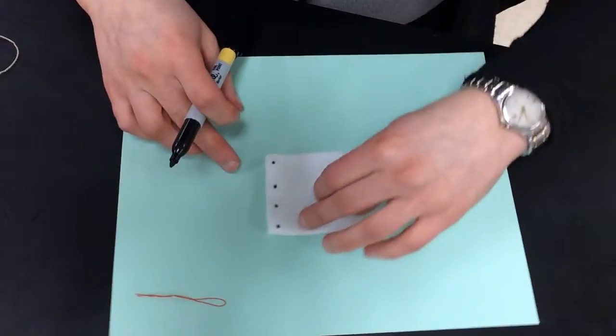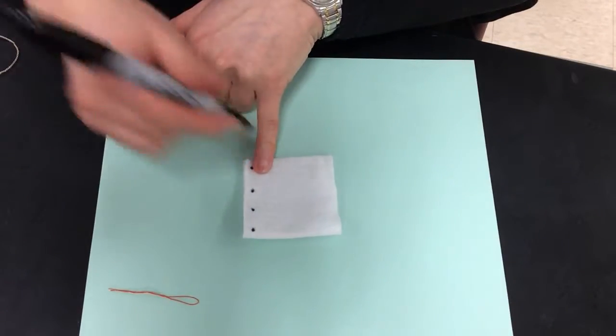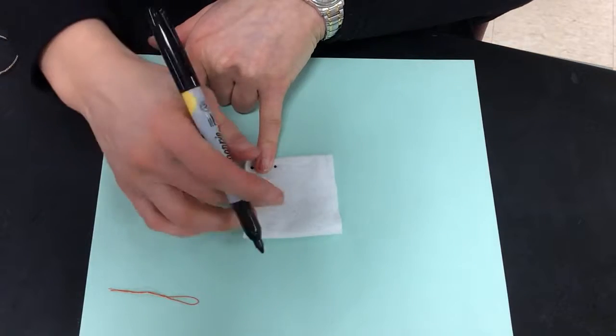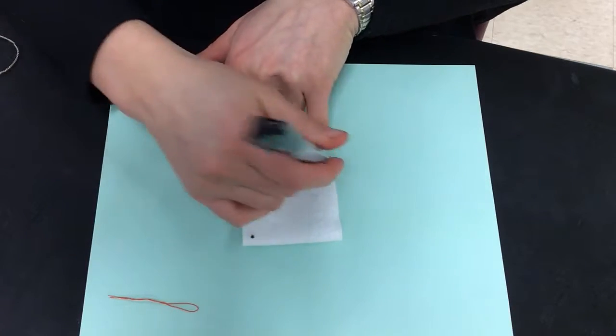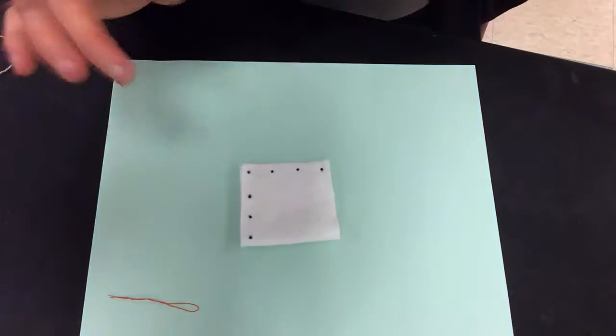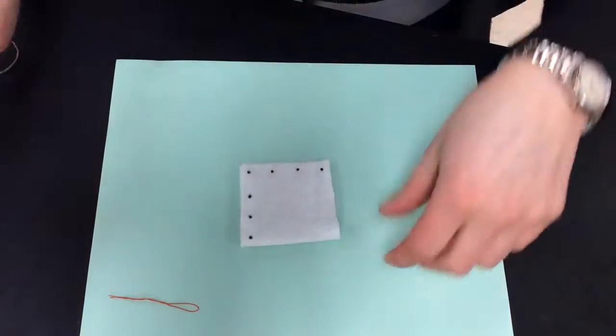And then I'm going to rotate this. I'm going to put a dot here, a dot here, and a dot here. Then I am done making my dots.